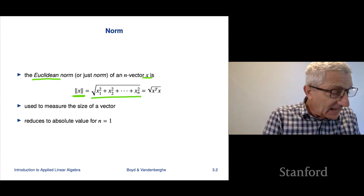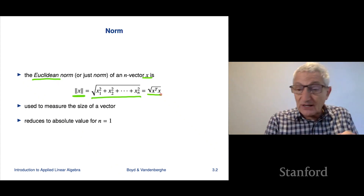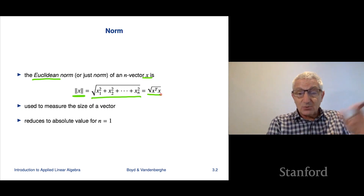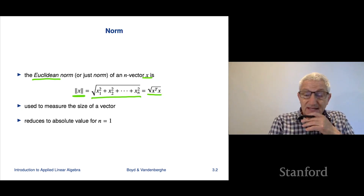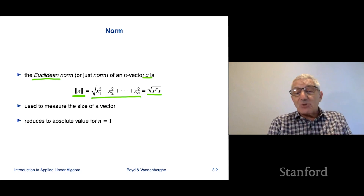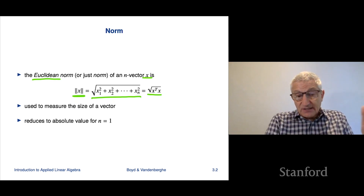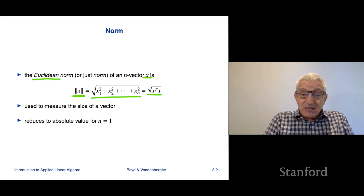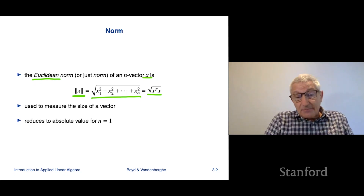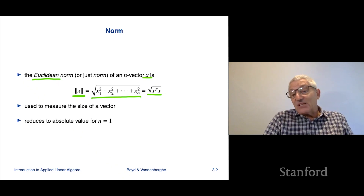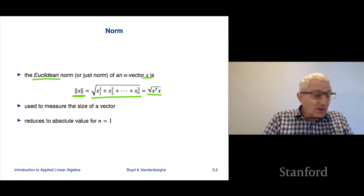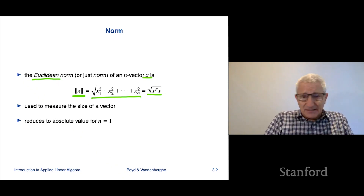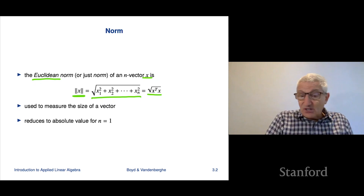You can also write the norm as the square root of the inner product of x with itself. The norm is supposed to measure the size of a vector. Some people say the length — unfortunately, the word length is a little ambiguous because it could either mean n, or it could mean the norm. So if you say size, it probably means the norm.